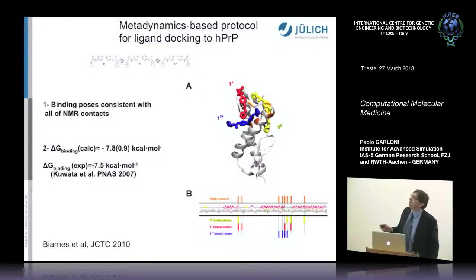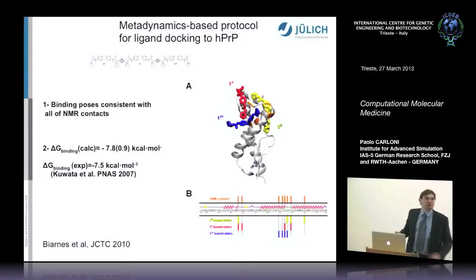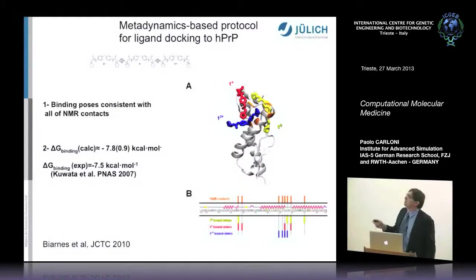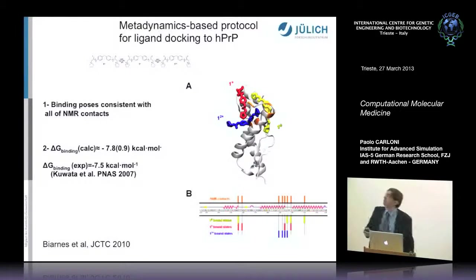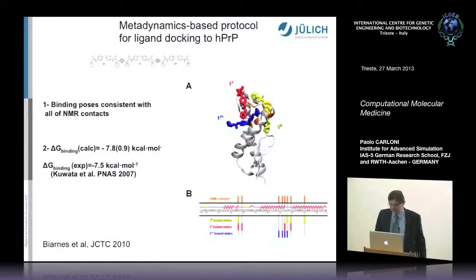The most interesting result is that there is not one single binding solution. Since we don't have a cavity but a surface, there are alternative almost equally energetic solutions. We found three, and taking all three together we are consistent with the NMR data. One of those is exactly the one the experimentalists postulated—they were very bright and got one of the three minima without any calculation—but the other two came out only in the computation.